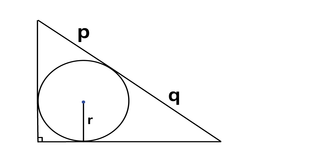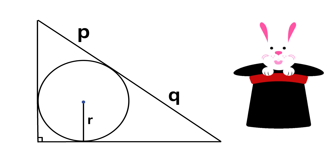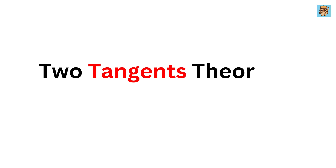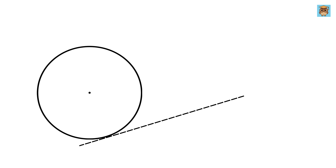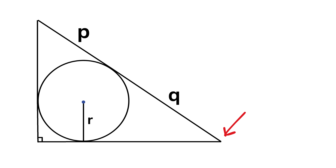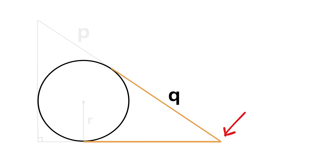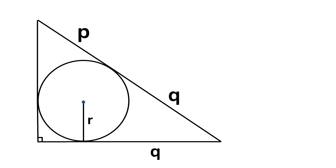Now here comes the magic: the two tangents theorem. If two tangents are drawn to a circle from a single external point, they are always equal in length. Looking at one vertex of the triangle, those two line segments act as tangents, so this piece equals q.